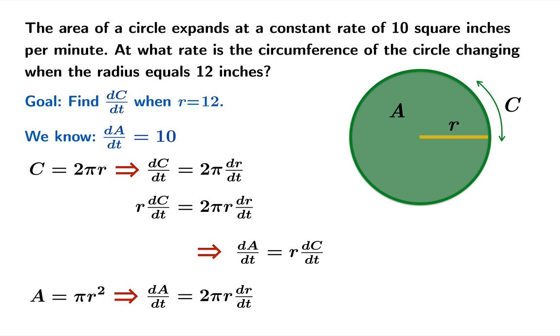Now what's nice about this is it's one equation that combines the rates of change of a and c and the radius r, and all of these show up in the problem. So dc/dt would be 1 over r dA/dt. And when r equals 12, we've got all the information we need to plug in, and we discover that dc/dt is 5/6, or about 0.833 inches per second.